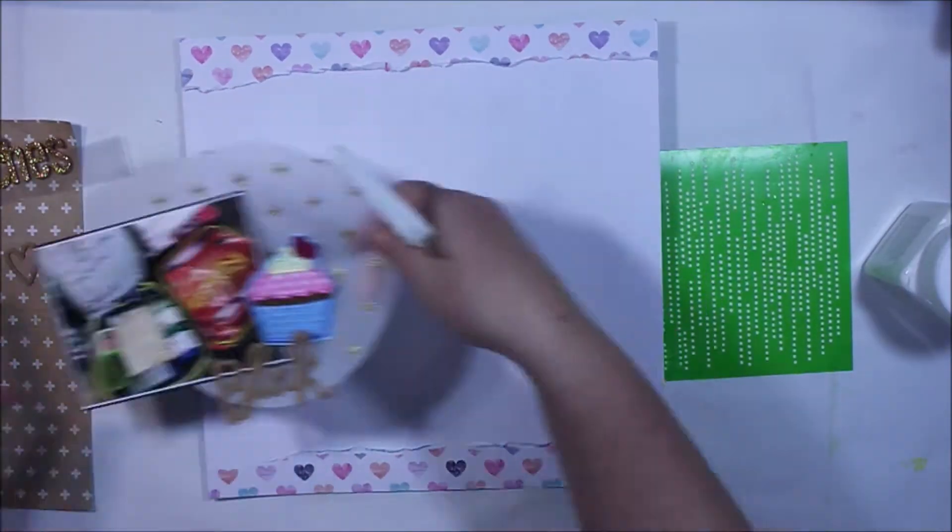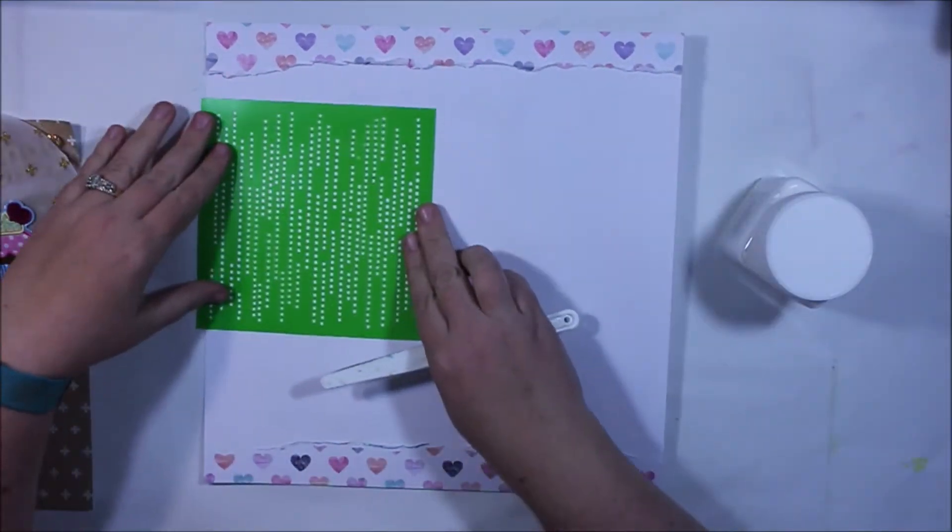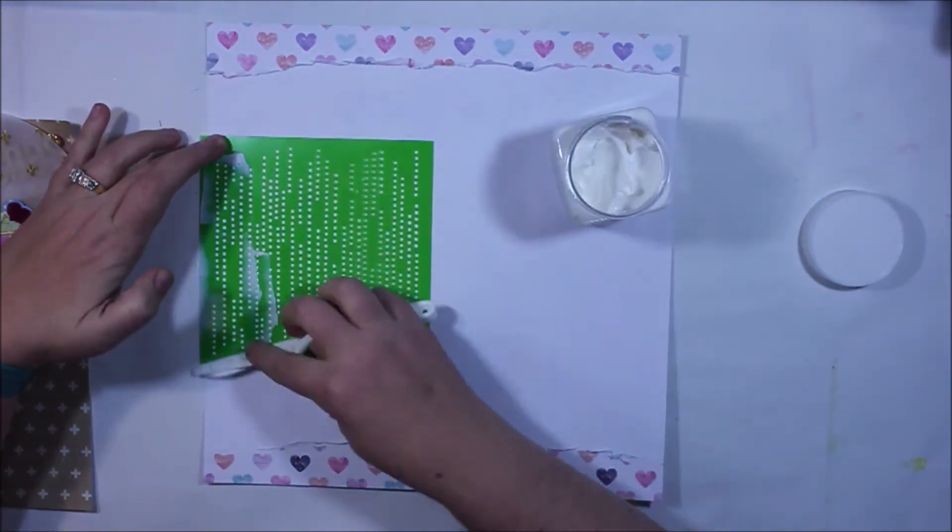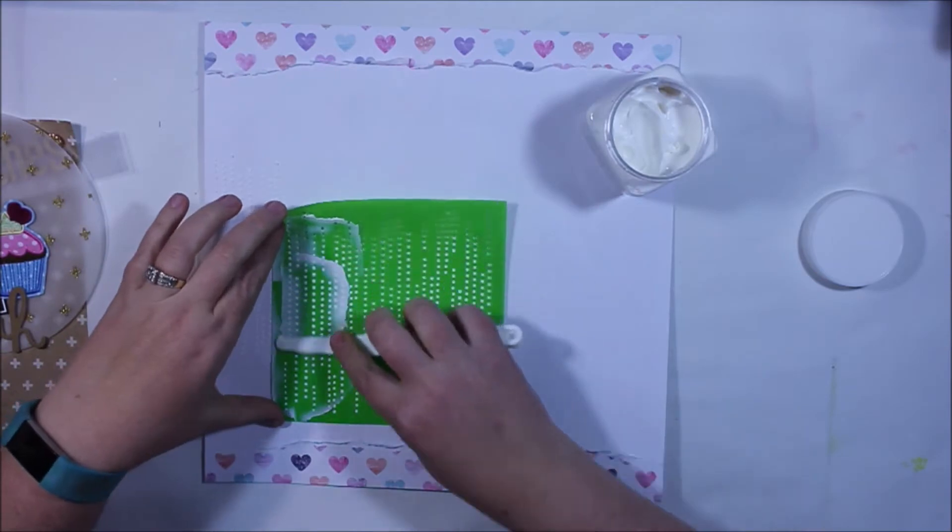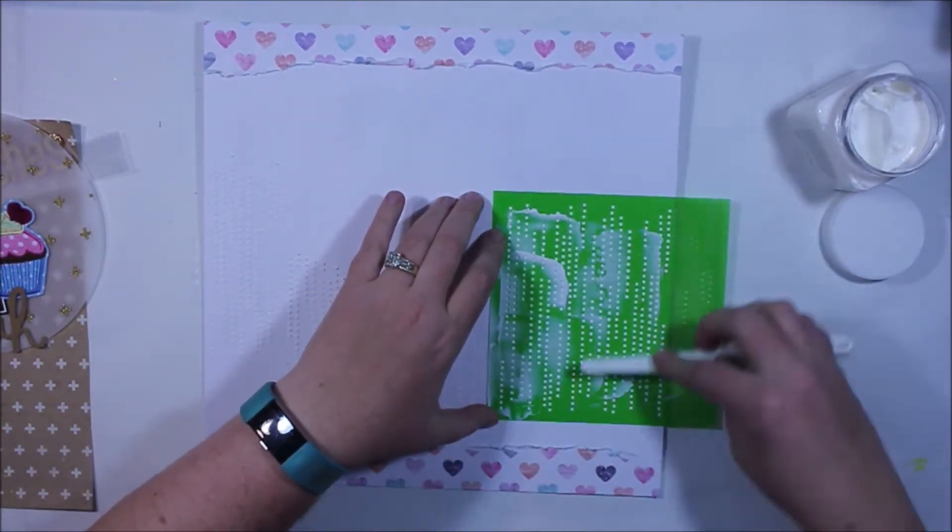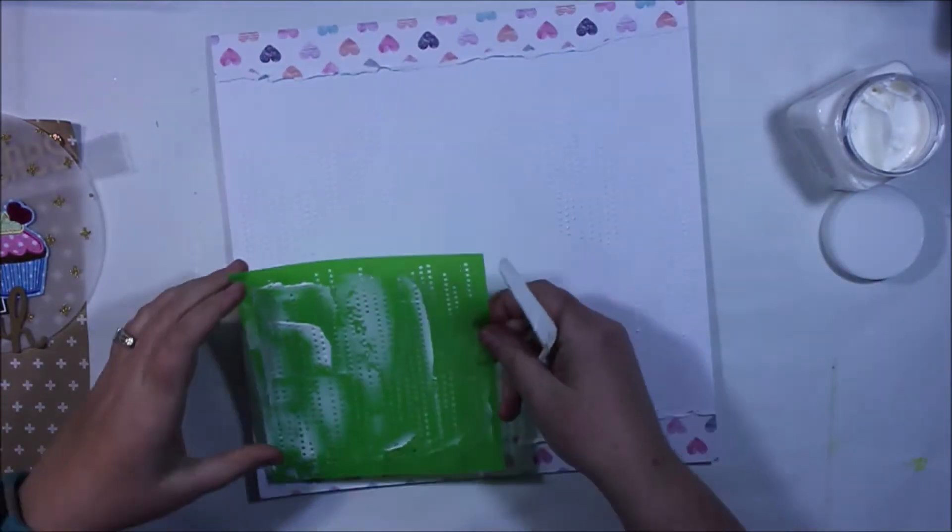Now you can see also I've got a stencil there and I've grabbed some paste too. I'm using the embossing paste, if you need to know what it is have a look in the video you'll see a link there, and I really like this embossing paste because it's so smooth and easy to spread.